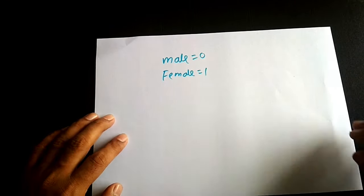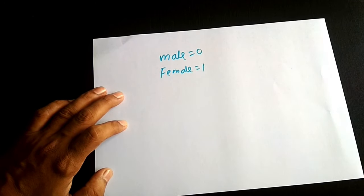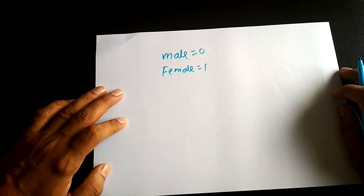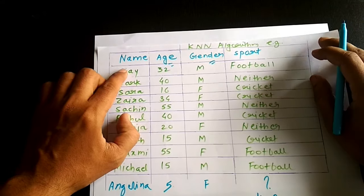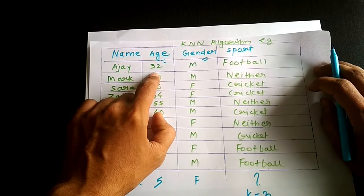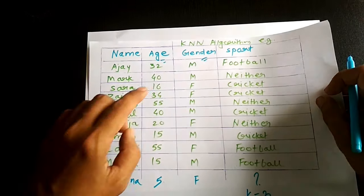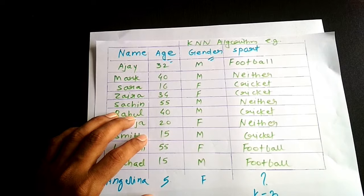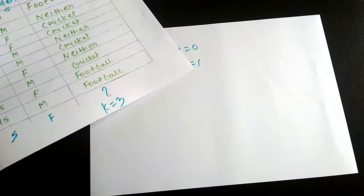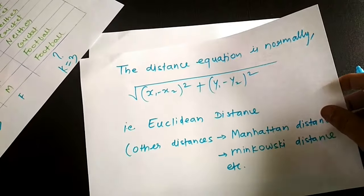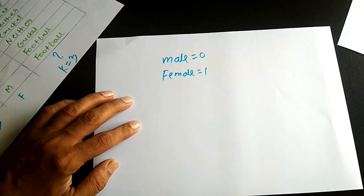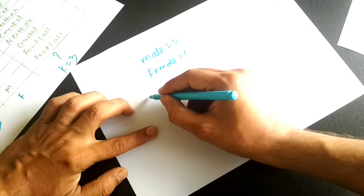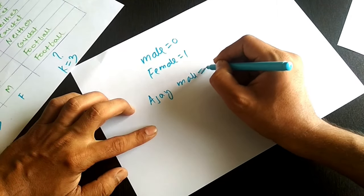Let's calculate the distance between Angelina and the first person in the reference data, Ajay. Ajay's age is 32 and he is male, so his gender value is 0. We apply the Euclidean distance formula to find the distance between Angelina and Ajay.